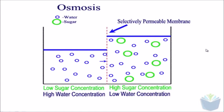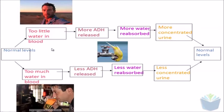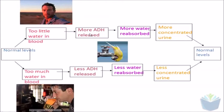So we're going to have a look at how ADH actually regulates blood water. Here you've got the normal levels, and if there's a change from that stable level — whether there's too little or too much — that change is detected by receptors. Information is then sent to the hypothalamus, which is the control center, which tells it to stimulate either more ADH in the case of there being too little, or less ADH if there's too much water.